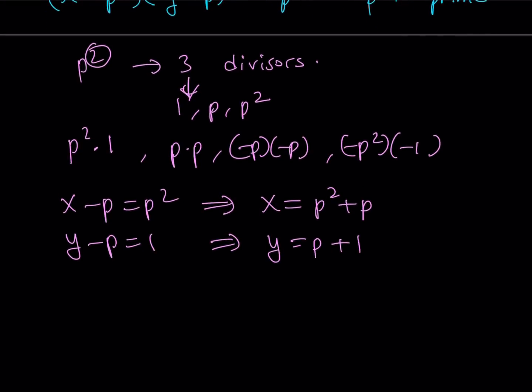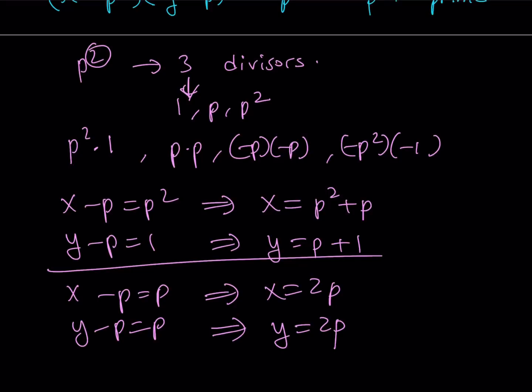Now, for the second situation, we have X minus P can be P, and Y minus P can be P as well. At the same time, from here, we get X equals 2P. Y equals 2P. So that's just another set of solutions.